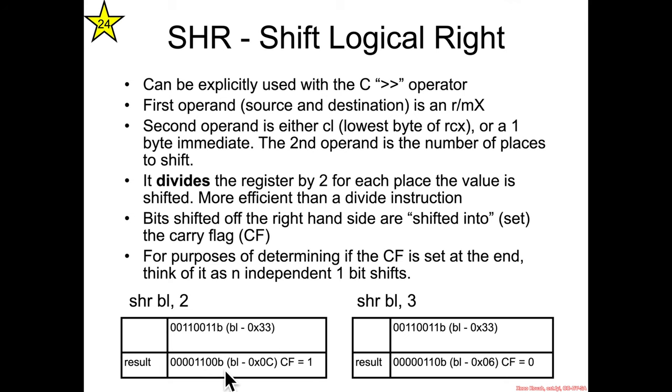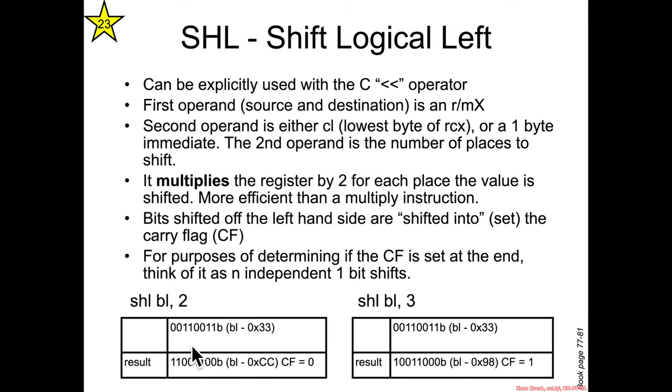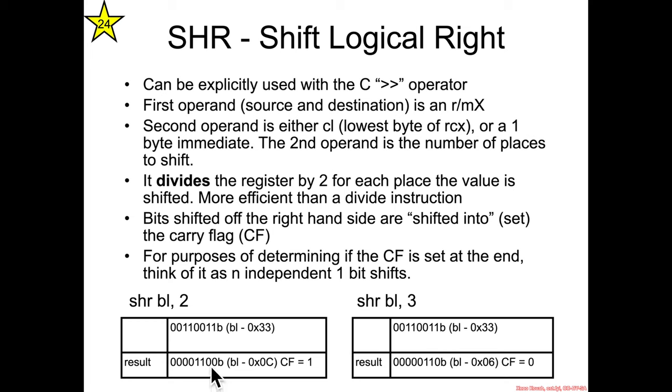I should have mentioned back here, on the shift logical left, when you're going to the left, the least significant bits are filled in with zeros. And on the shift logical right, when you're shifting to the right, the most significant bits are filled with zeros.